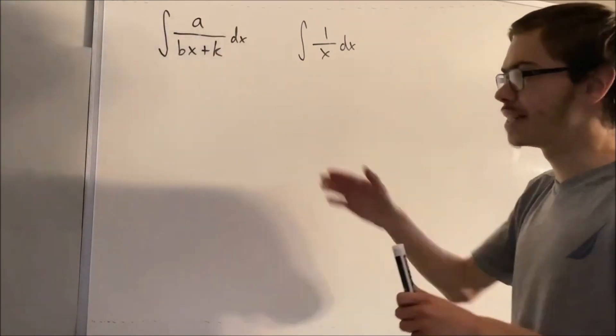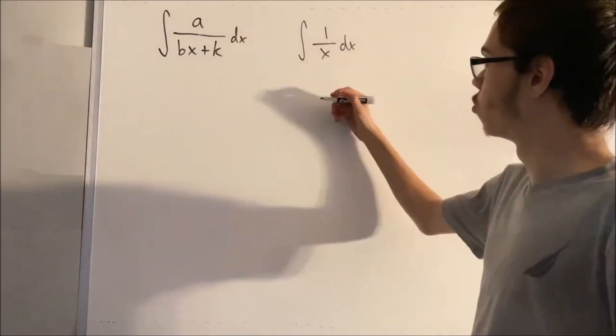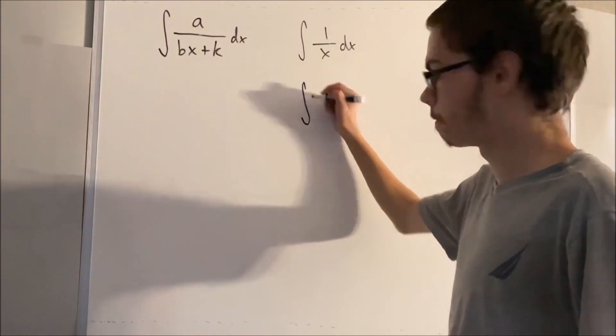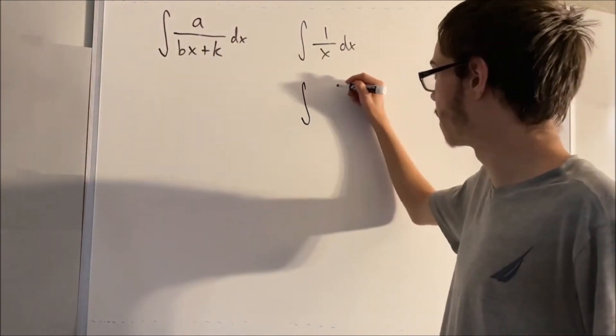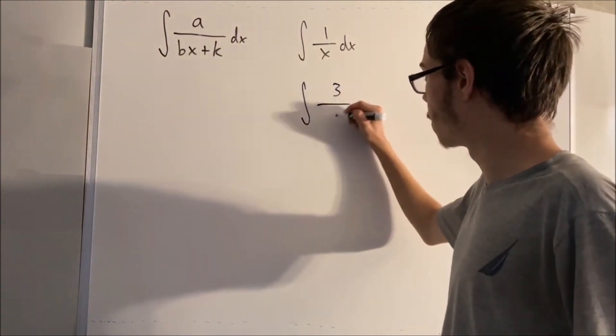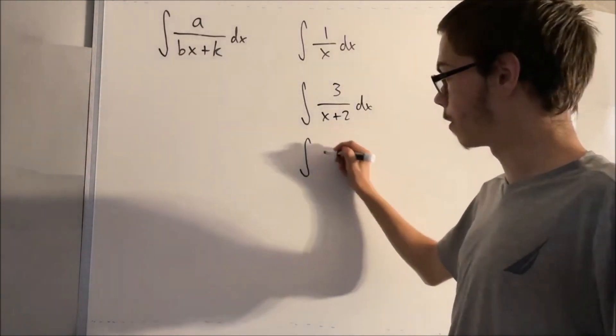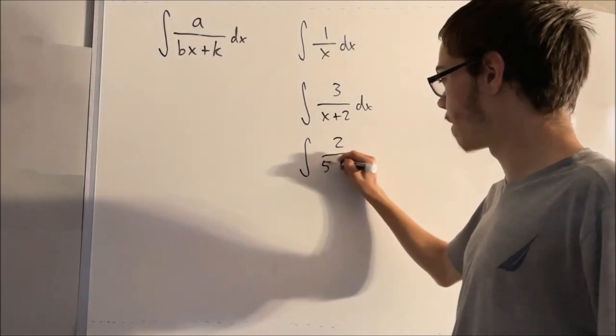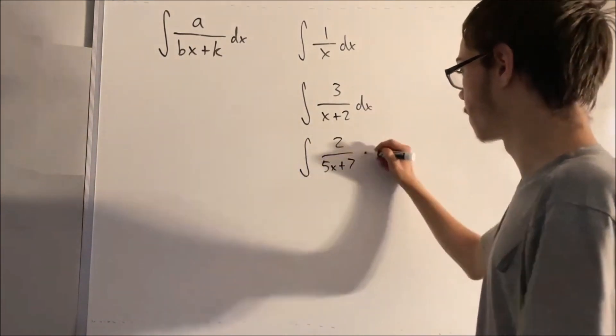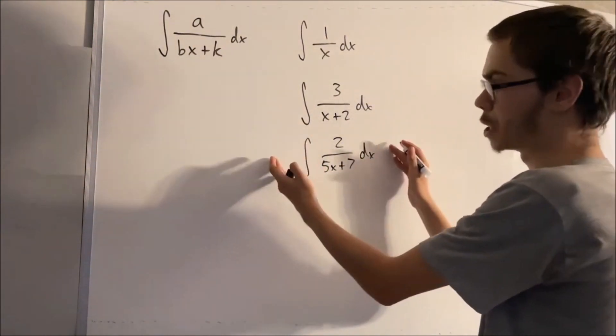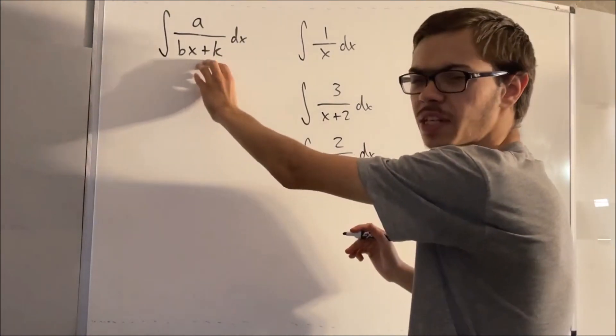So an example of an integral in this form would be something that looks like this. For instance, if we had, let's say, 3 over x plus 2, or if we had 2 over 5x plus 7. Something in that general form is all this integral is.